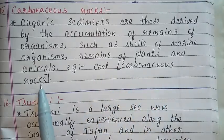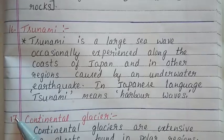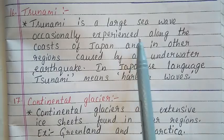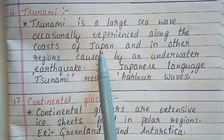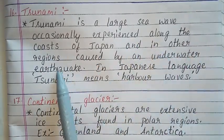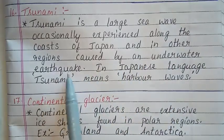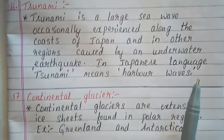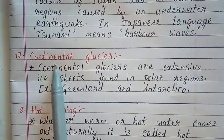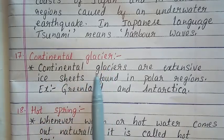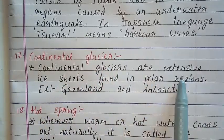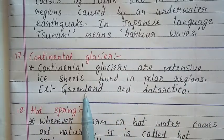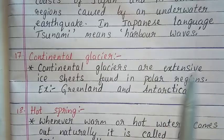Question 16: Tsunami. Answer: A Tsunami is a large sea wave occasionally experienced along the coasts of Japan and other regions, caused by an underwater earthquake. In Japanese, Tsunami means 'harbor waves.' Question 17: Continental Glacier. Answer: Continental glaciers are extensive ice sheets found in polar regions. Examples: Greenland and Antarctica.